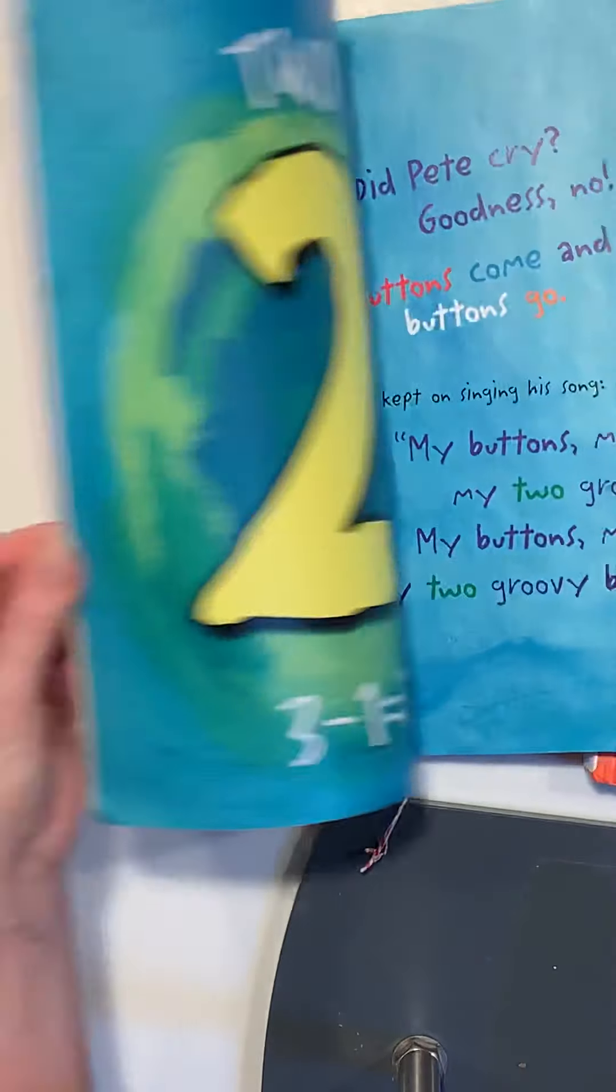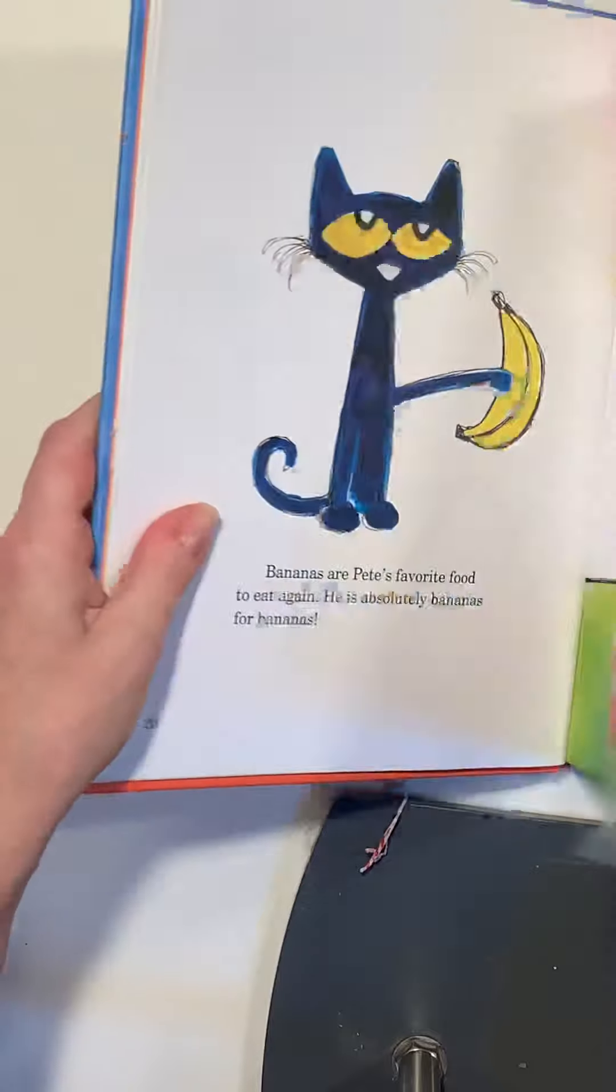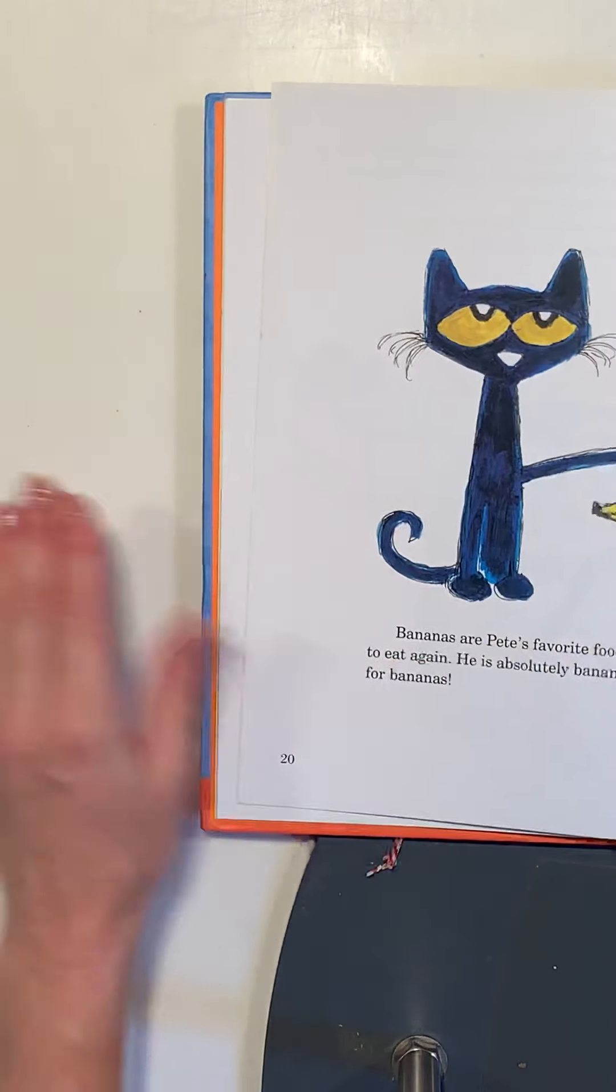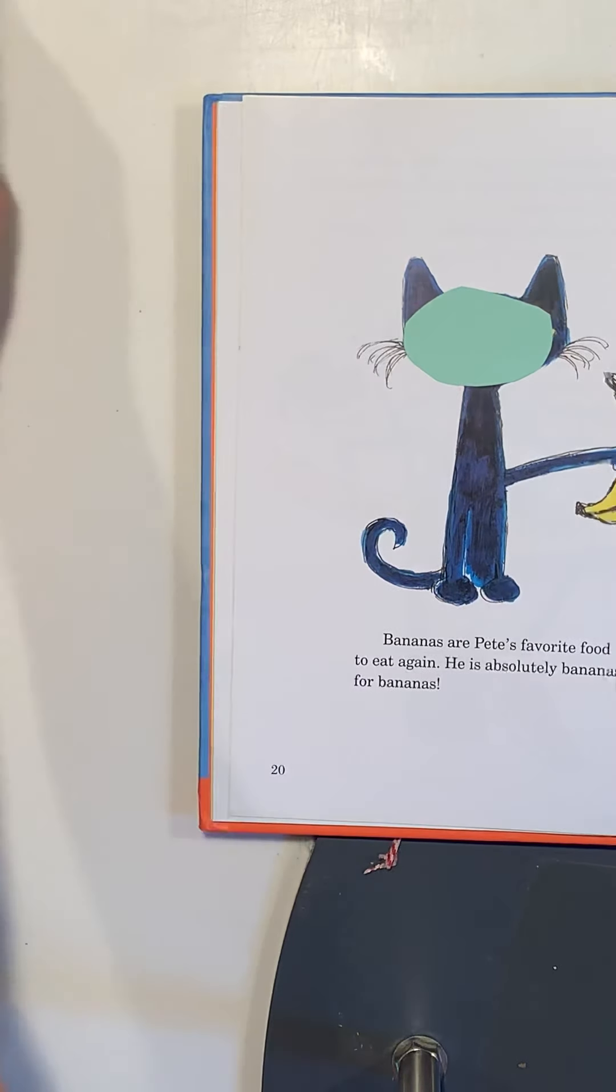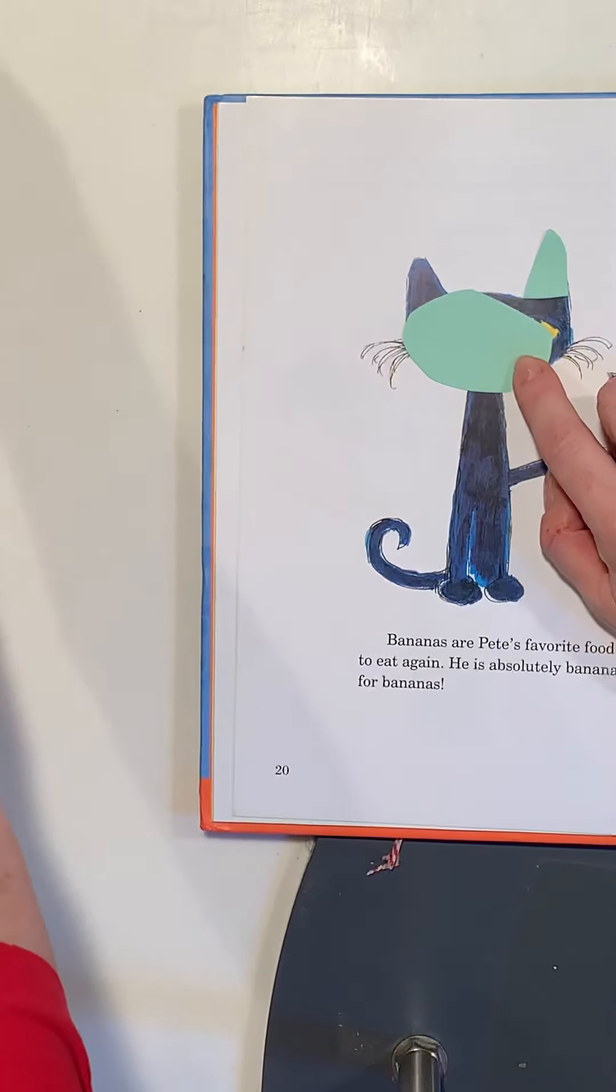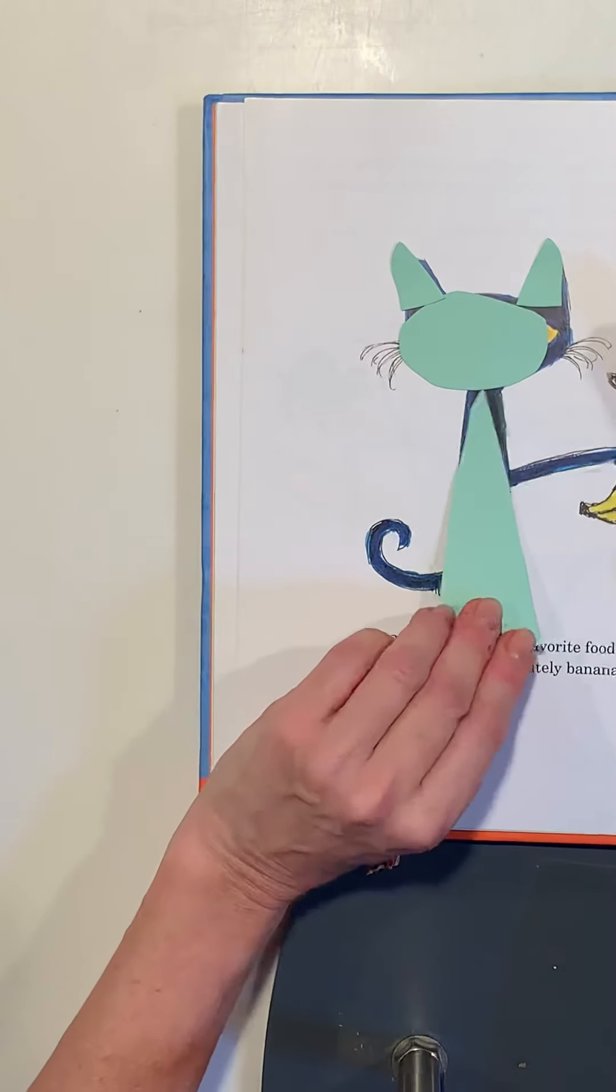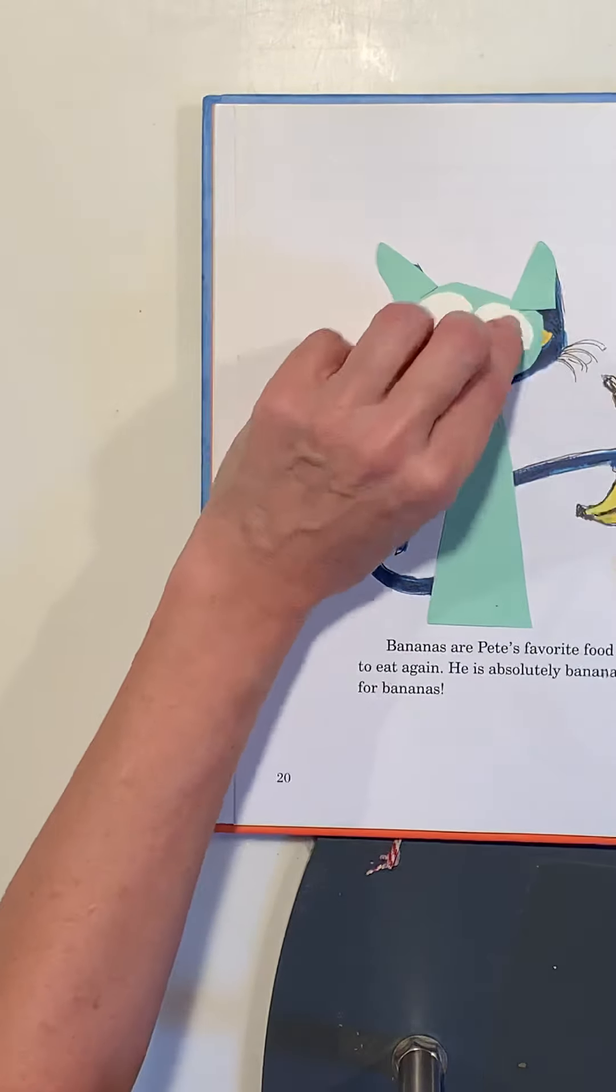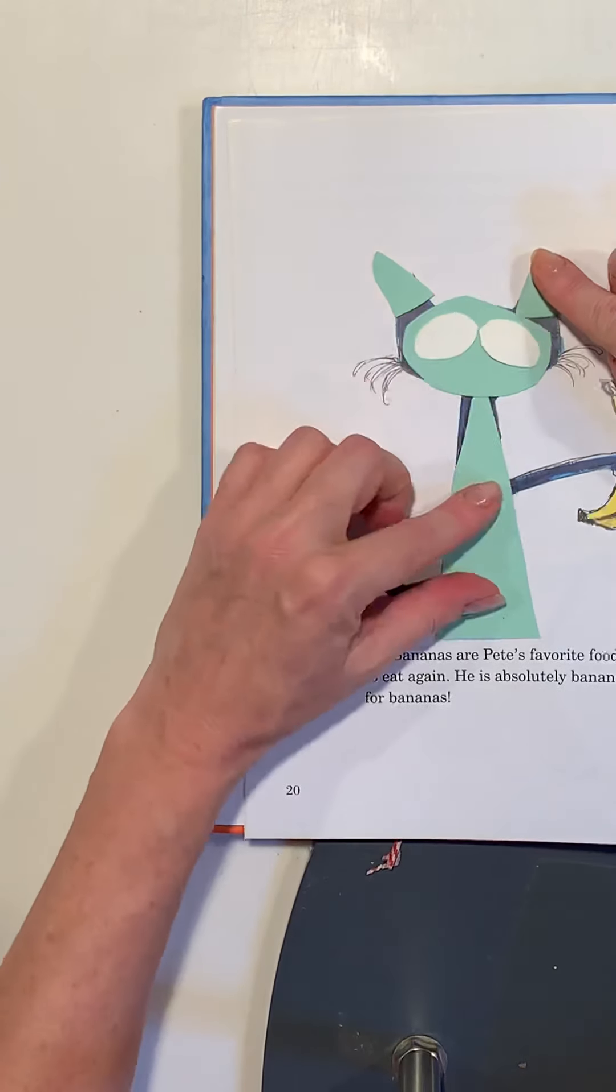So here's how we're going to start. We have Pete and Pete is just some simple shapes. We have an oval for his face, we have two triangles for his ears, we have a big triangle for his body, and then we have two big ovals for his eyeballs. If you see it this way, it's easy, it's kind of easy to plan out.